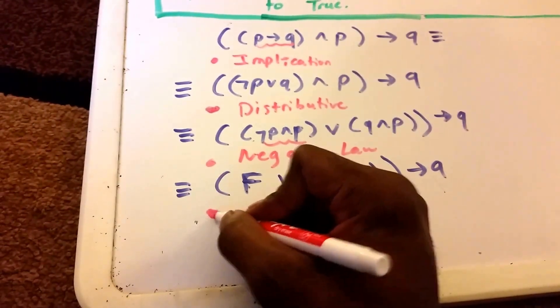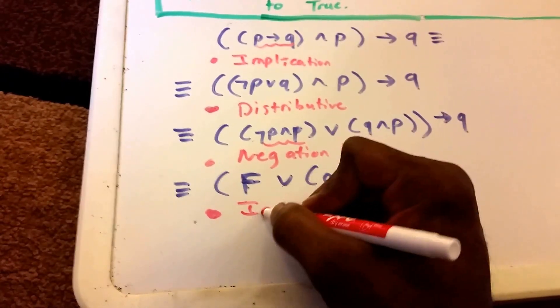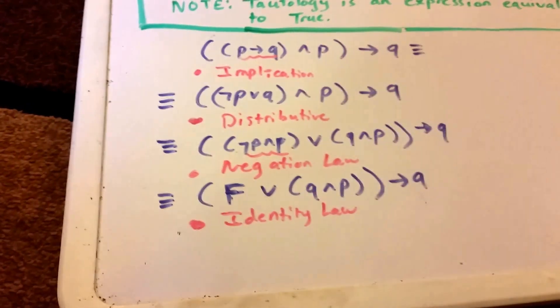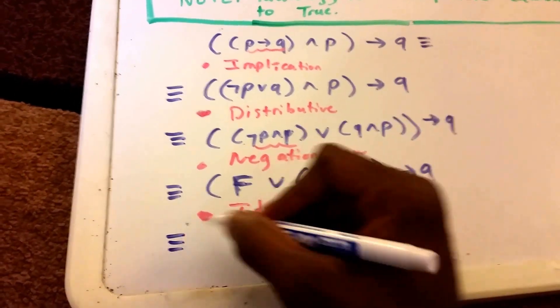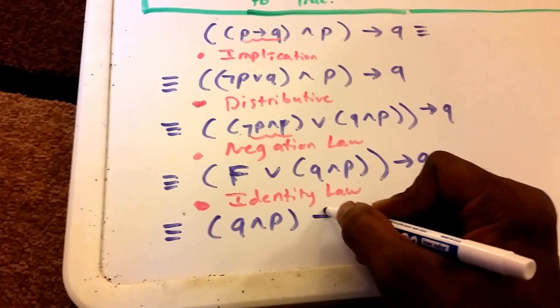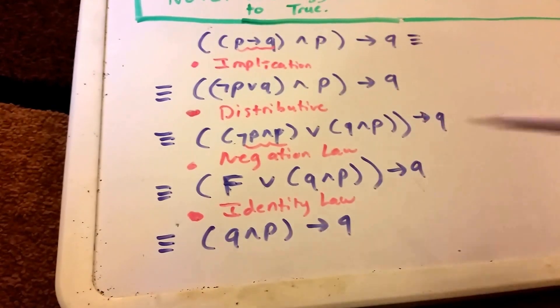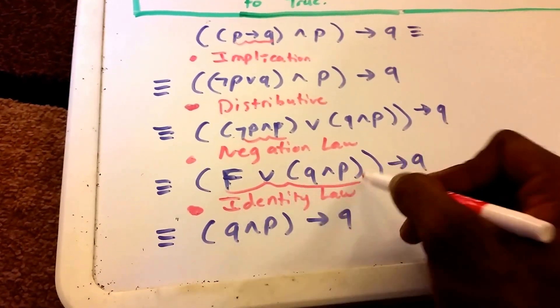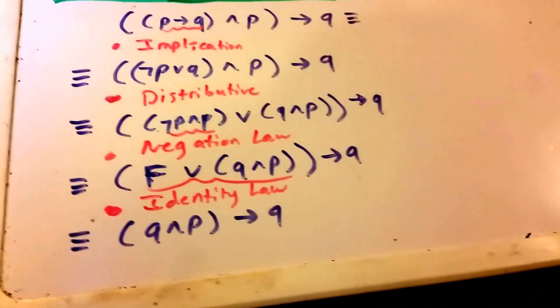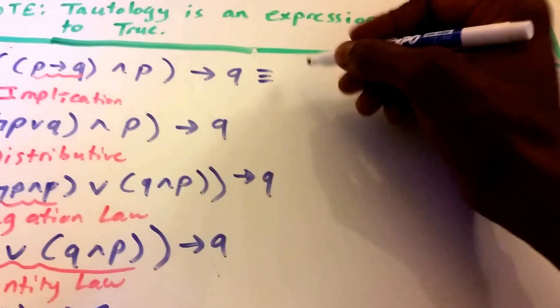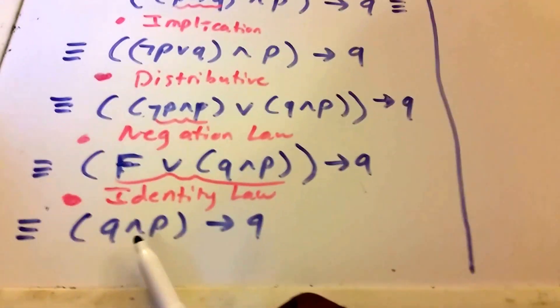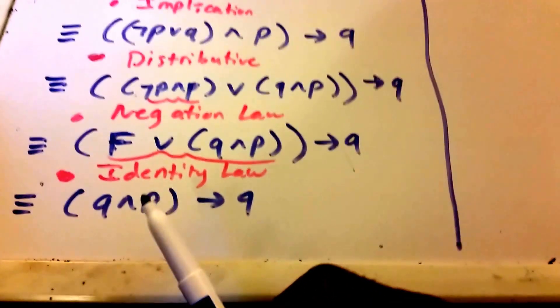So let's look here, what we want to use next. I say we use the identity law, and that'll get rid of this F for us. So now it's going to be equivalent to Q and P implies Q. So you can see the expression we just got rid of was here. We got rid of that false using the identity law. So I'm going to put another line here so we can continue with our proof. And so this is what we have right now: Q and P implies Q.